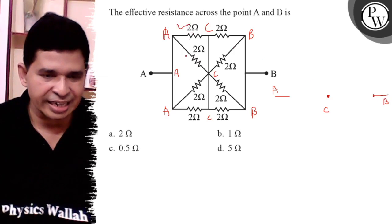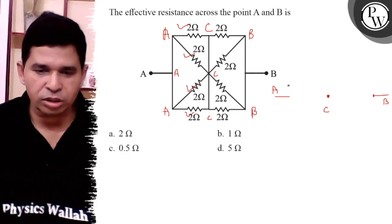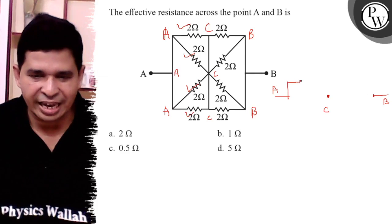one resistance is connected, second resistance is connected, third, fourth—four resistances are connected between A and C.